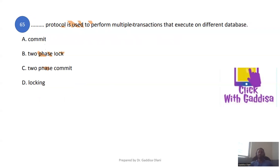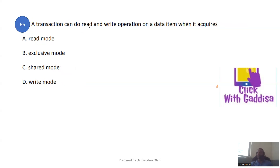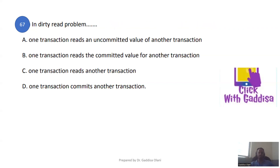The two-phase commit protocol is used to perform multiple transactions that execute on different databases. Each database involved is affected, and changes are coordinated through the two-phase commit.